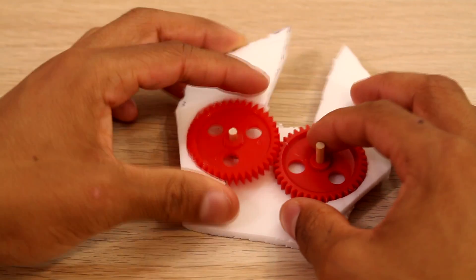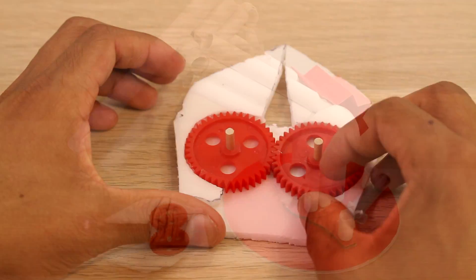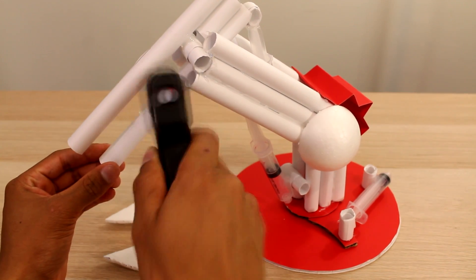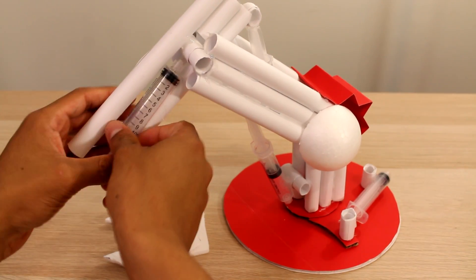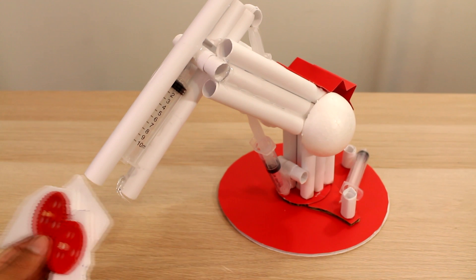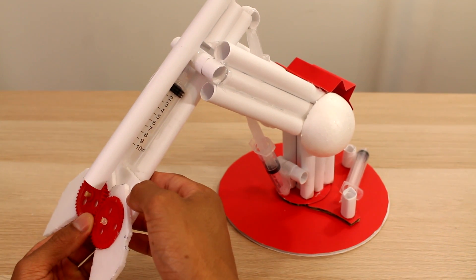Now I put them in place. And as you can see, it seems to work pretty well. So now let's glue this down into place. But first, we'll put our little syringe in place. And this syringe is going to be the one that controls the grabbers.